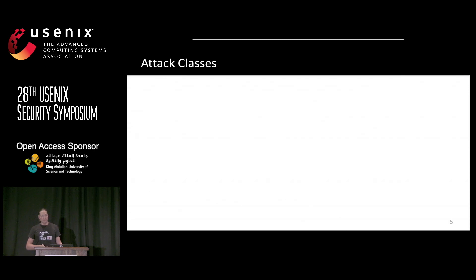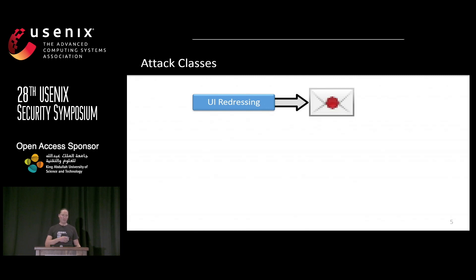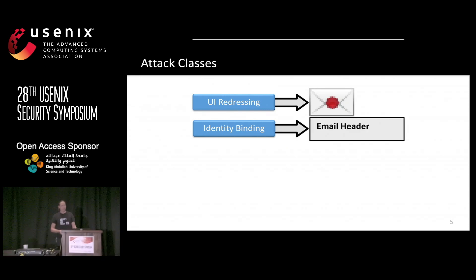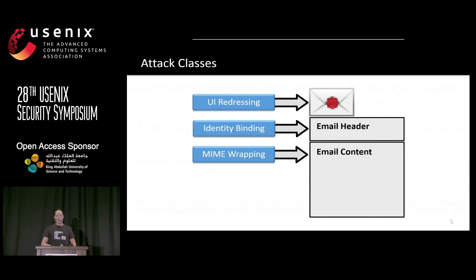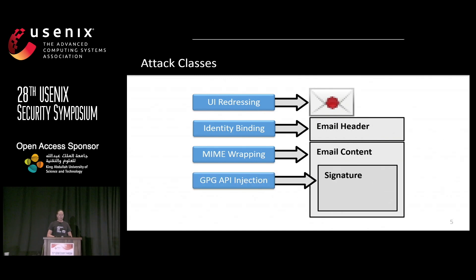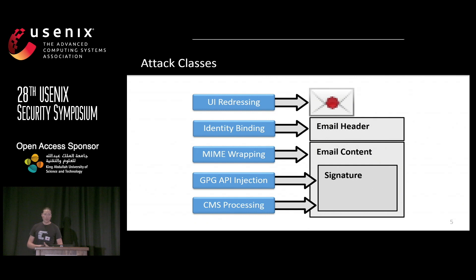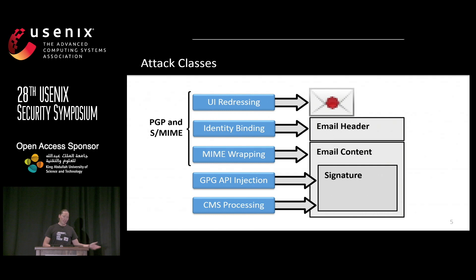We attack different layers of email and divided our attacks into five classes: simple UI redressing targeting how signature verification results are presented; missing binding of the signer's identity to the sender address from the email header; MIME wrapping attacks targeting the email body; a deeper look at how GnuPG processes the PGP signature format; and CMS, the container format used by S/MIME. The first three attack classes target both PGP and S/MIME; the last two are specific to each.